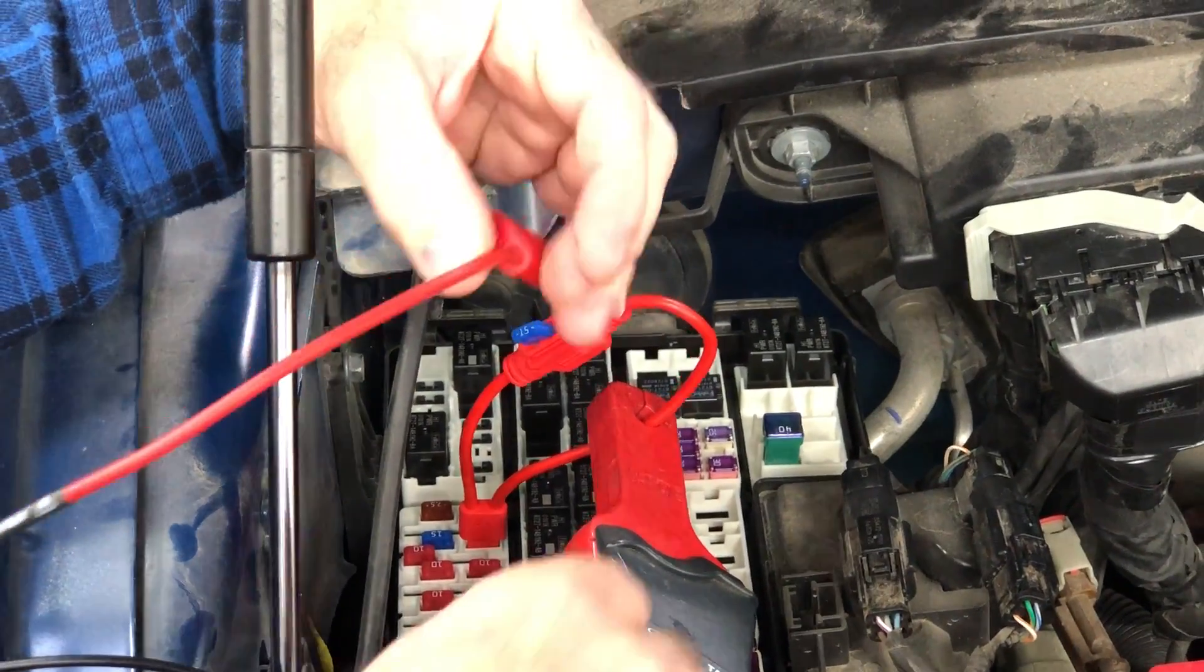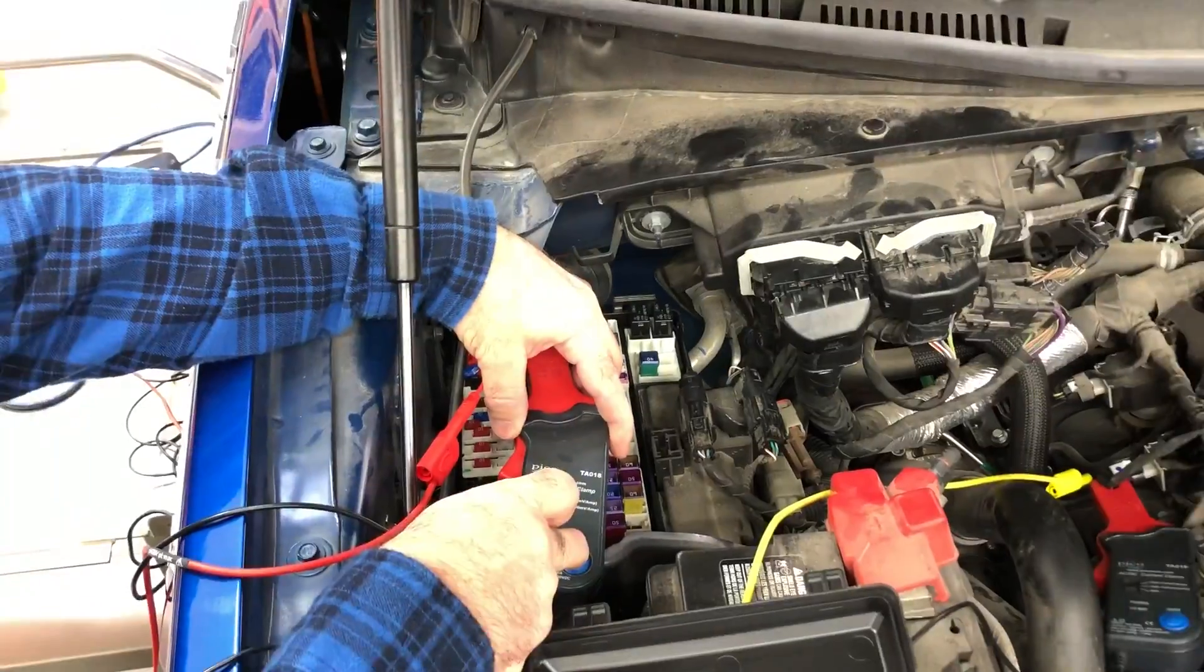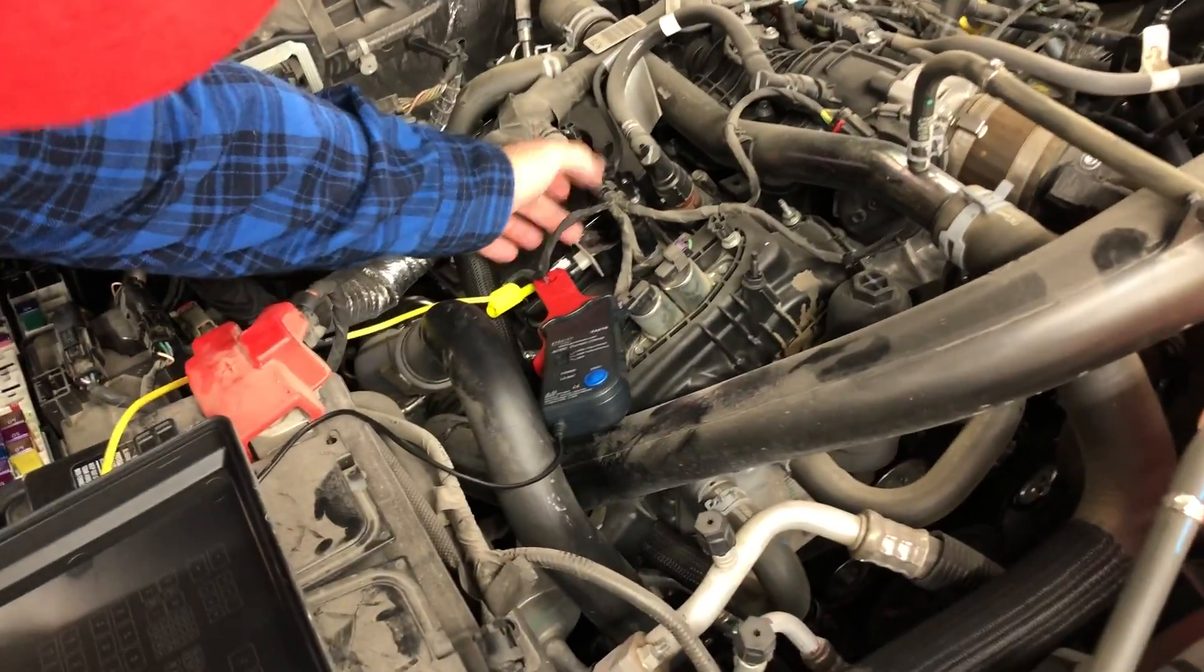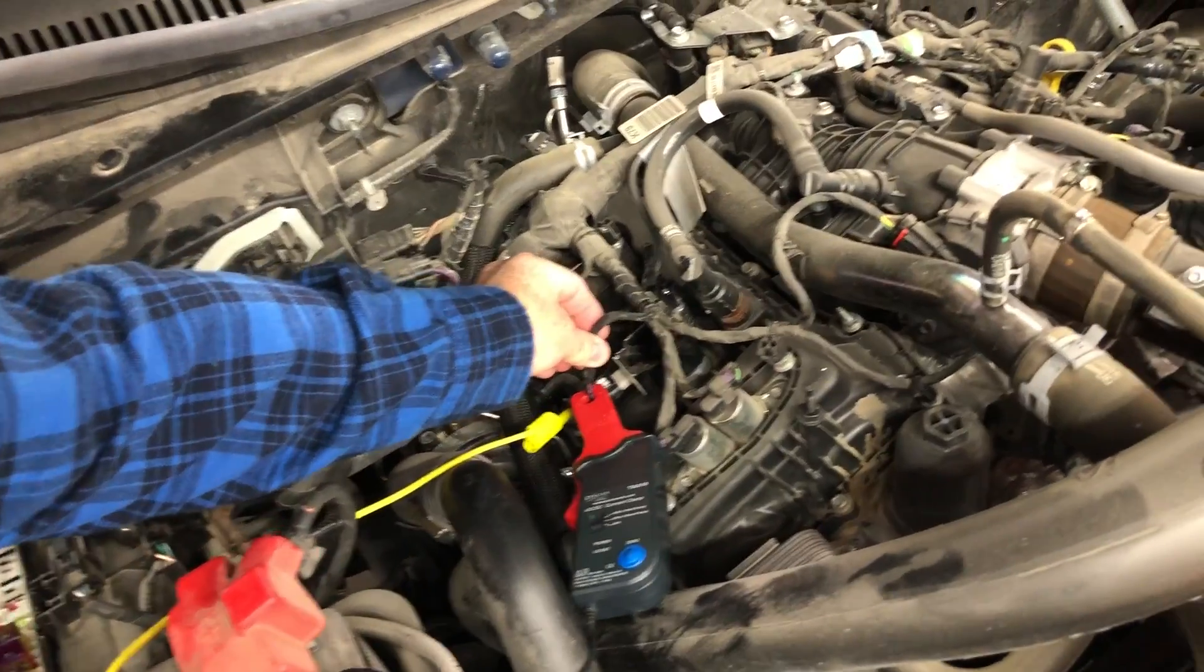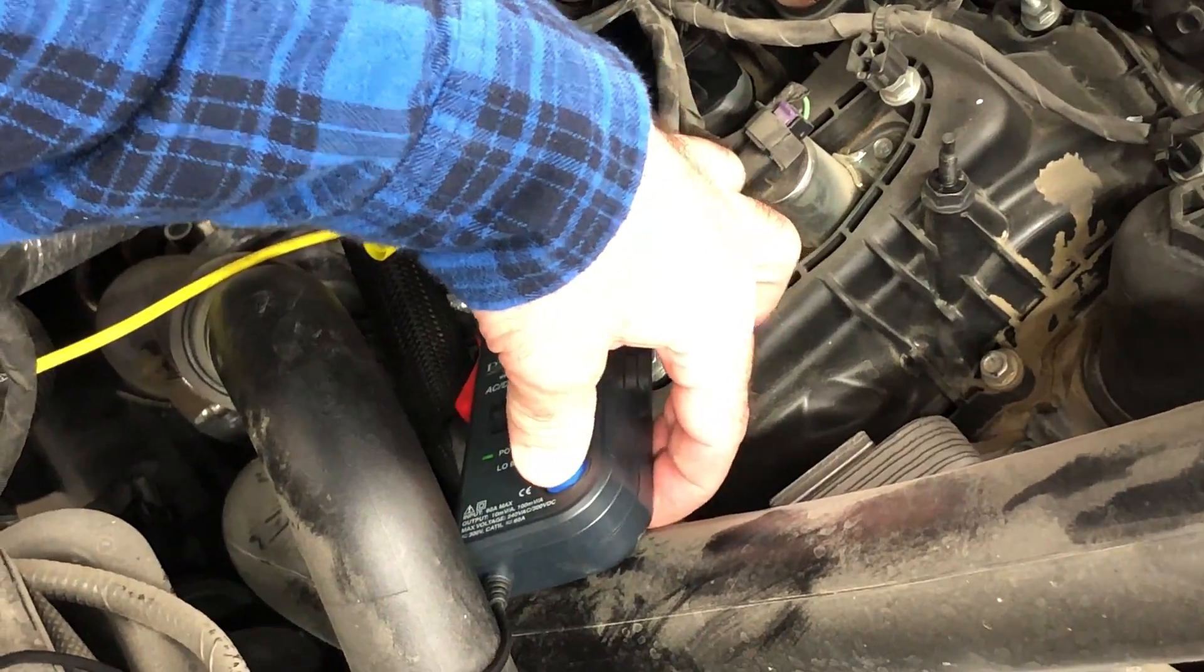So now we need to turn on our amp clamps. Always zero your clamps. Down here's cylinder number one. I'm on the power feed wire here, so we're going to zero that one.